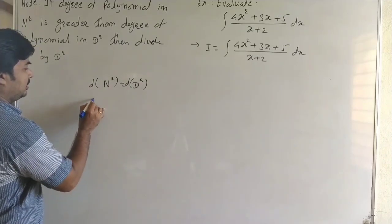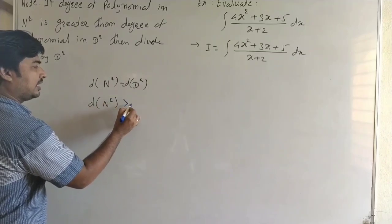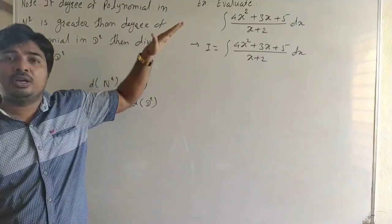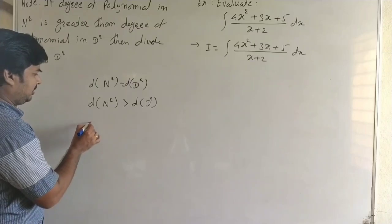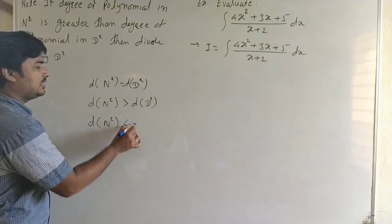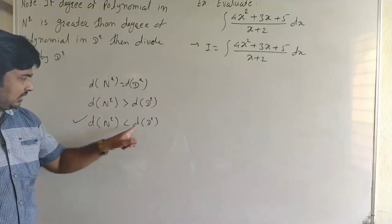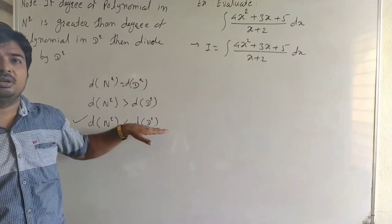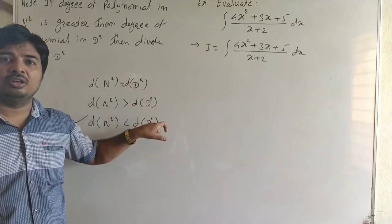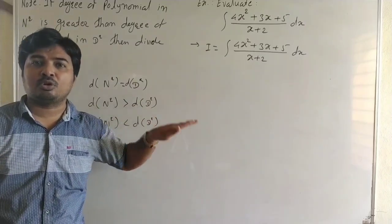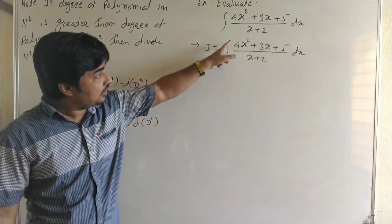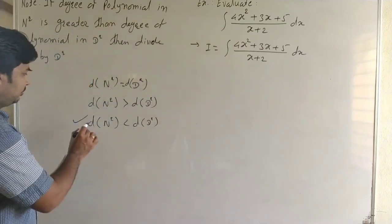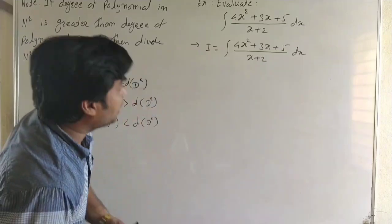There are three possibilities for the degree. First: degree of numerator equals degree of denominator — adjust denominator in numerator. Second: degree of numerator is greater than degree of denominator — divide numerator by denominator. Third: degree of numerator is less than degree of denominator — we will see this type in the next lectures, it is the partial fraction method, integration of linear upon quadratic type.